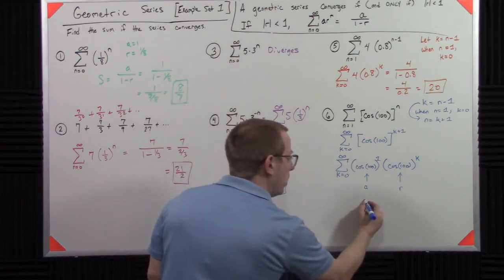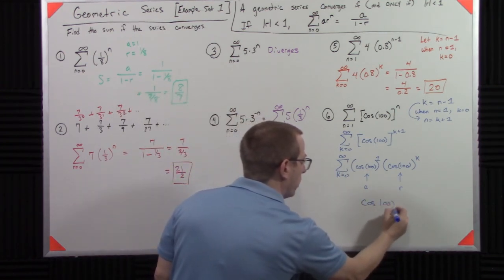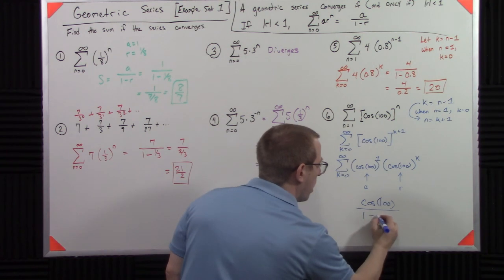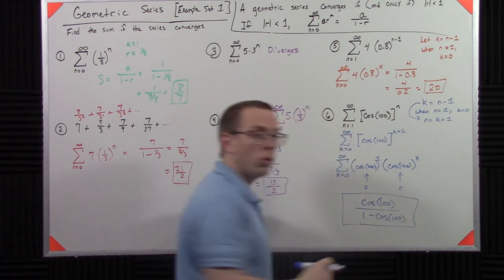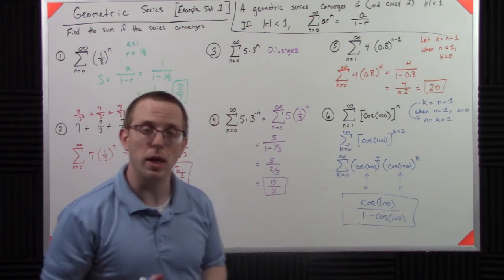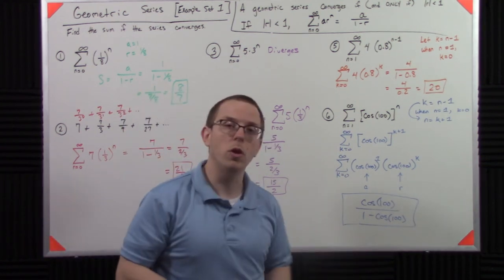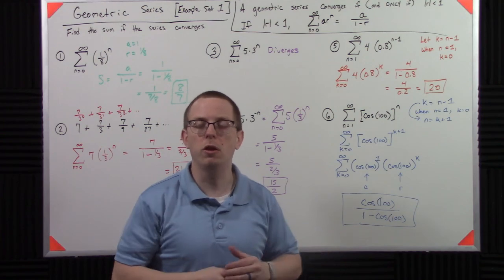So my answer is cosine of 100 over 1 minus cosine of 100. I don't know what that is. I don't have to know what that is. But I do know that it converges to that and I can plug it into a calculator if I want to see the value.